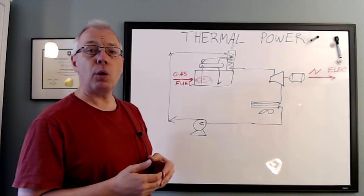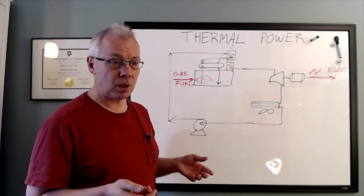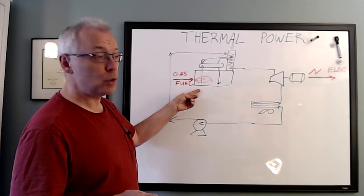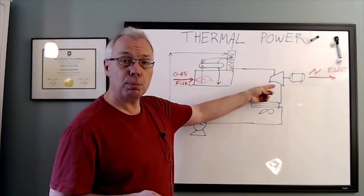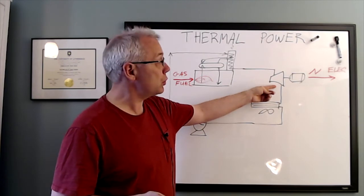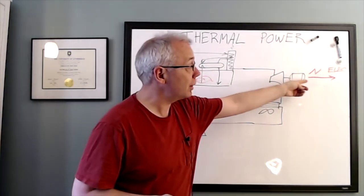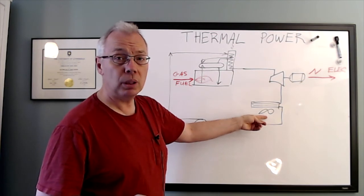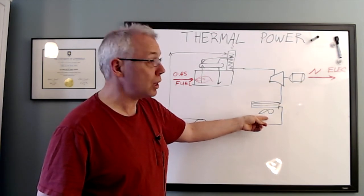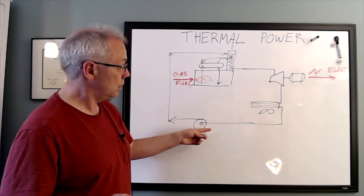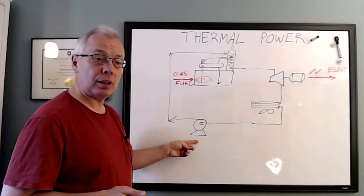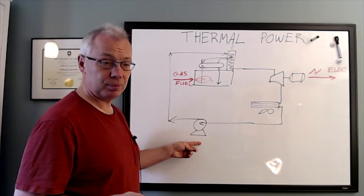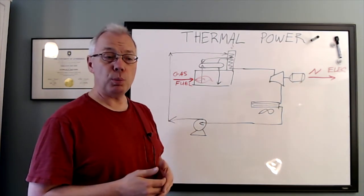A thermal power plant is a loop with a boiler that burns fuel to produce steam, a turbine that converts the energy from the steam into electrical energy, a condenser that condenses the low-pressure steam back into liquid water, and a recirculation pump to deliver the water back to the boiler. We will look at each part of this loop.